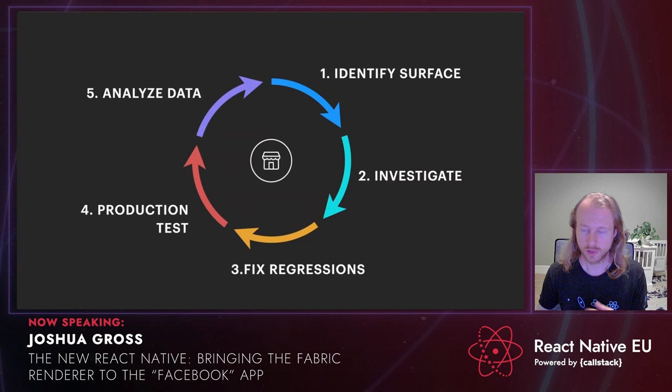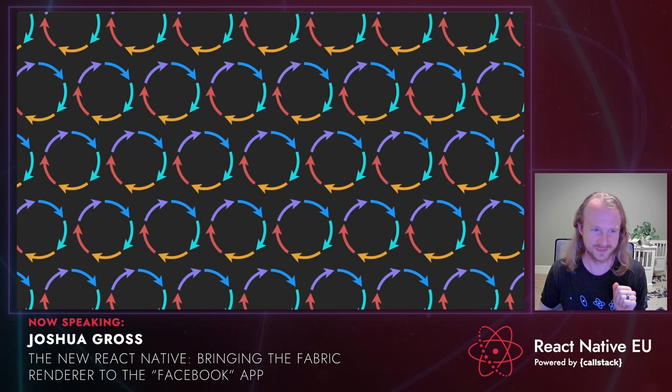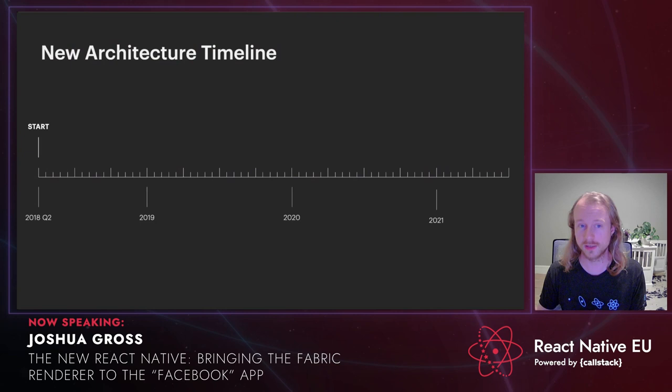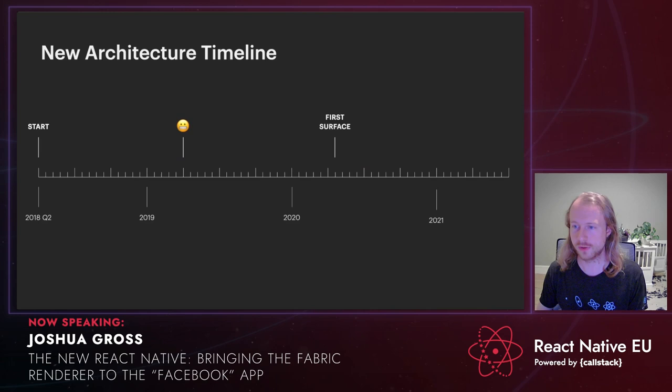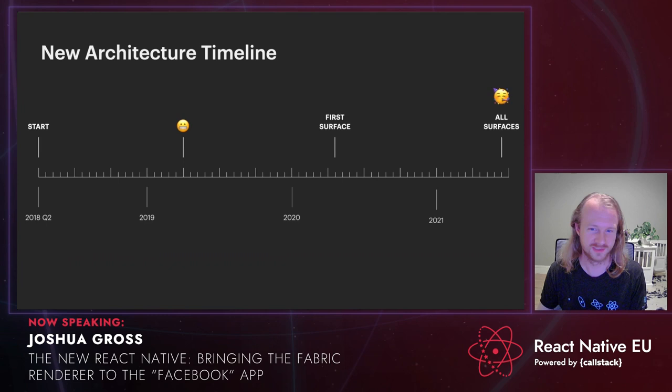After we nailed the cycle and this workflow, all we had to do was repeat it a thousand times. We thought this was going to be a six-month project — that's not a joke. It took us about a full year before we realized the full scope of the migration. From the start, it took about two years to enable the architecture on the first surface, and nine months after that to enable Fabric on all the rest. So our estimations were only about five times off — pretty good in the world of software.